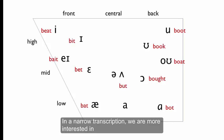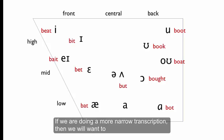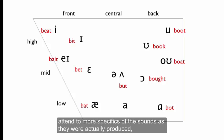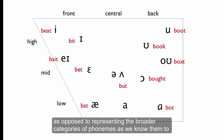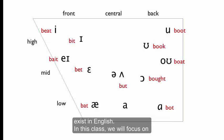In a narrow transcription, we're much more interested in getting fine-grained detail about a specific production. If we're doing more of a narrow transcription, then we'll want to attend to more specifics of the sounds as they are actually produced, as opposed to representing the broader categories of phonemes as we know them to exist in English.